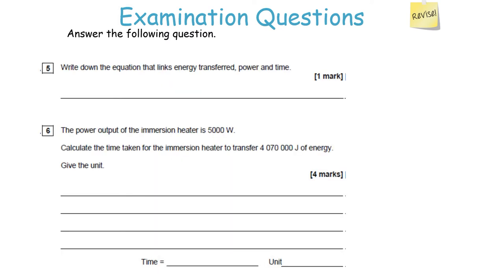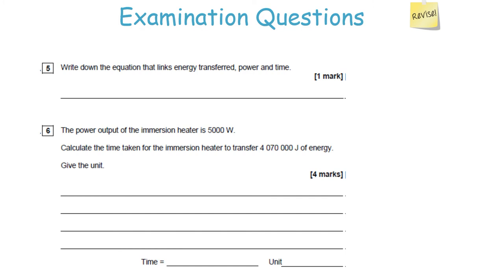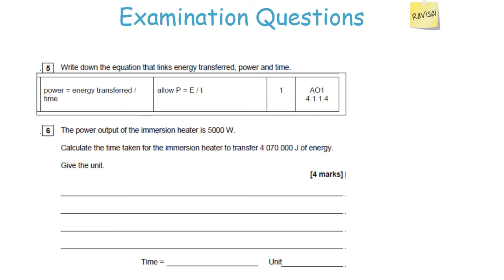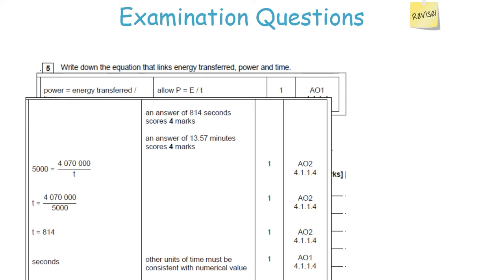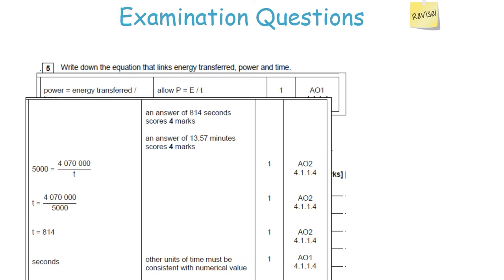Write down the equation linking energy transferred, power and time. The immersion heater has a power output of 5,000 watts. Calculate the time taken to transfer 4,070,000 joules. Power equals energy transferred over time, or P equals E over T. In this question, power is in watts and energy is in joules — no conversion needed. So 5,000 equals 4,070,000 divided by time, giving time equals 814 seconds. In physics, time is always in seconds.